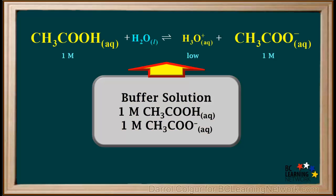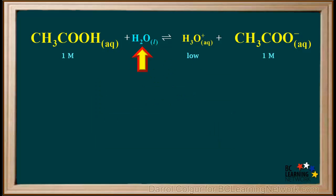Here is the equilibrium equation describing this buffer. Because this is an aqueous solution, any changes in the amount of water in this equilibrium are insignificant. We'll color the water blue and won't be concerned with it. The concentration of hydronium in this equilibrium is much lower than the 1 molar concentrations of acetic acid and acetate.